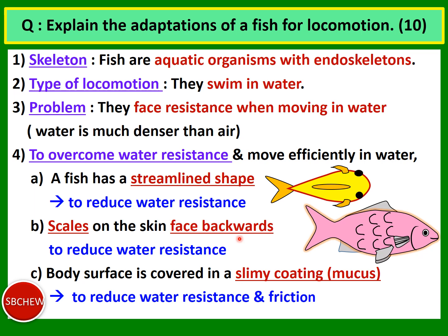The second adaptation is scales on the skin that face backwards to reduce water resistance. The scales open up towards the tail, allowing water to flow over the body surface without getting trapped. If the scales opened the opposite way, water would get trapped inside the openings and create more water resistance.